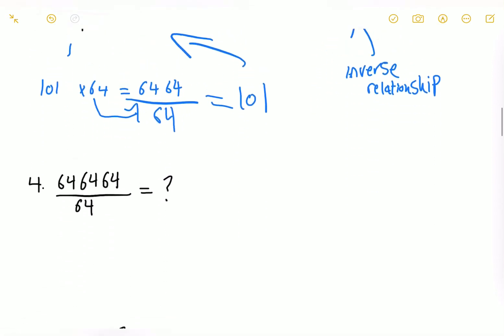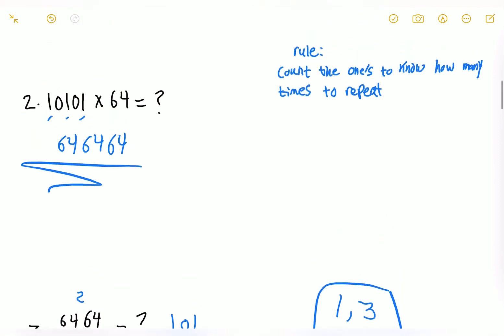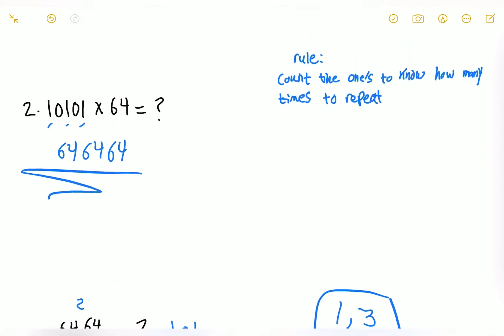So now we know that number 1 and number 3 have an inverse relationship. Now let's move on to number 4. Number 4 says there's 3 sets of 64, so there's 1, there's 2, and there's 3. So 1, 2, 3, and there's 1 here. What does that mean? We go back and we look at our number 2.